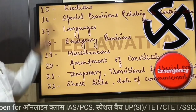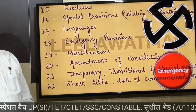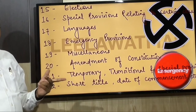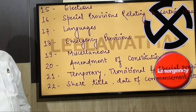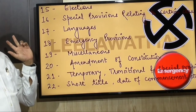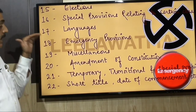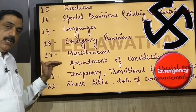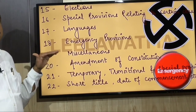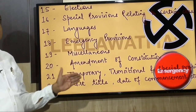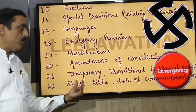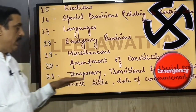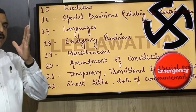Continuing the story: Part 22 is the short title and date of commencement of the Constitution. Revision of Parts 15–22: 15 — election; 16 — special provision for certain classes; 17 — languages a leader knows; 18 — emergency, be with common people; 19 — miscellaneous function; 20 — amendment in the Indian Constitution; 21 — temporary and transitional provisions; 22 — date of commencement and short title.